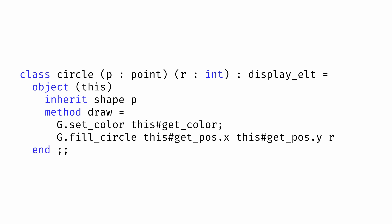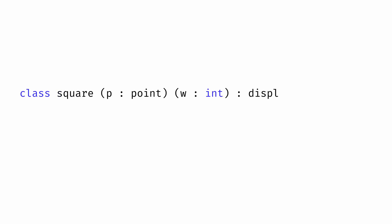And defining a class for squares is even easier. A square is just a rectangle where the height and width are the same. So we could define a class square that just inherits from the rect class using the side length of the square as both the width and the height. The result is that the square class inherits all of the behavior from the rectangle class, including how to draw it, without needing to write any square-specific methods of our own.